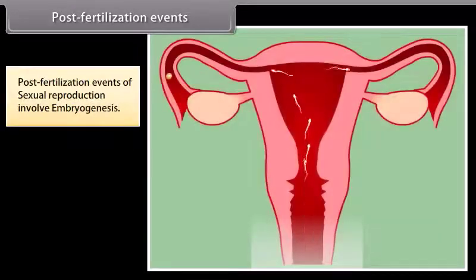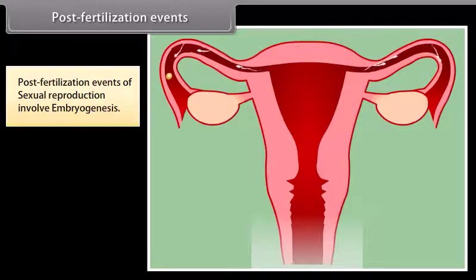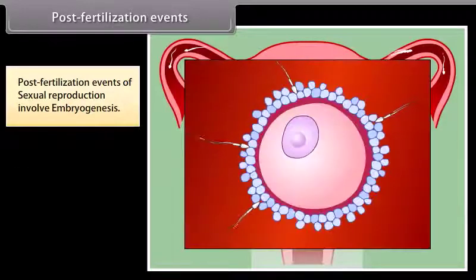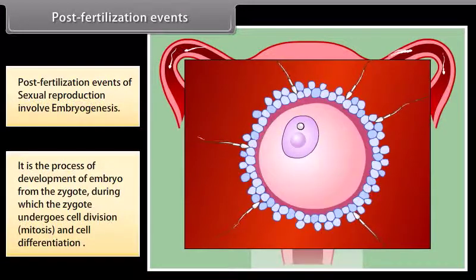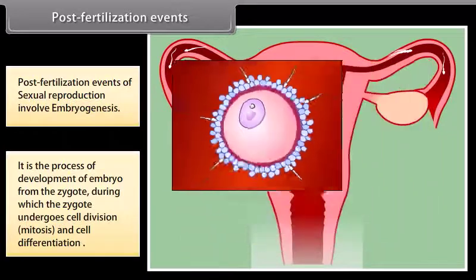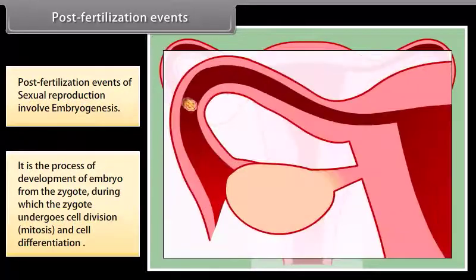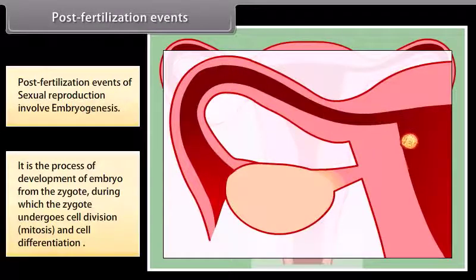Post-fertilization events of sexual reproduction involve embryogenesis. It is the process of development of an embryo from the zygote, during which the zygote undergoes cell division, mitosis and cell differentiation as shown in the diagram.